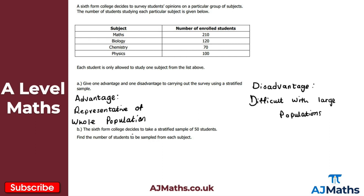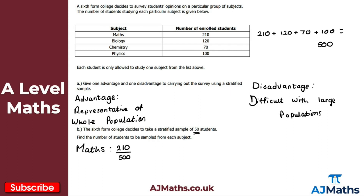For part B, the college takes a stratified sample of 50 students, and we need to find how many students should be sampled from each subject. First, we find the total number of students: 210 + 120 + 70 + 100 = 500. For maths, we calculate 210/500 × 50 = 21 students.